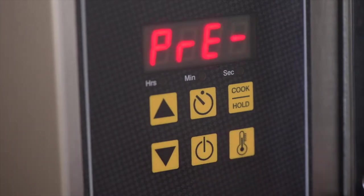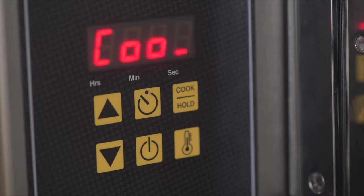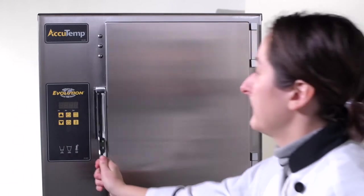The steamer will display preheat on the control panel, letting you know the steamer is preheating. Once cooking temperature is achieved, the display will change to cook. Your steamer is now ready to use.